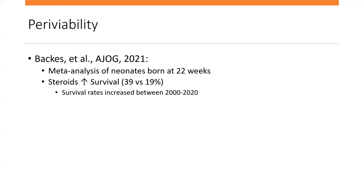Then in 2021, a meta-analysis of neonates born at 22 weeks demonstrated that steroids improve survival, with a pooled survival rate of 29% — which is pretty high. I would say national averages are probably closer to 5 to 10% survival; there are certainly institutions with higher rates, but 29% is quite high. When they looked at pooled survival, neonates who got steroids had 39% survival versus 19% — survival to hospital discharge. Not surprisingly, a temporal analysis found that survival rates increased between 2000 and 2020, given how much neonatal care has improved for peri-viability.